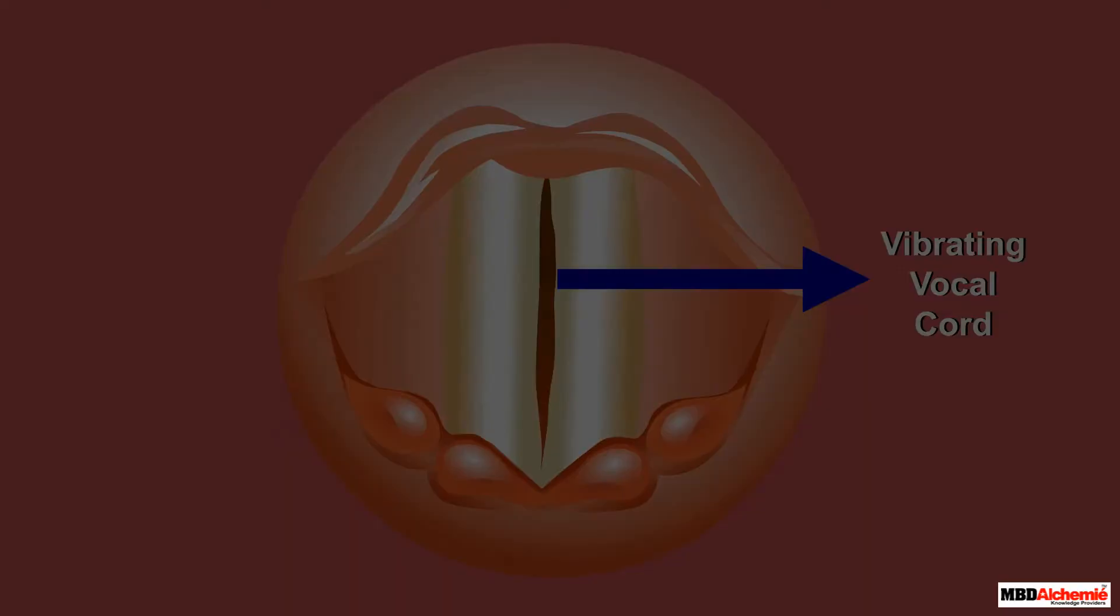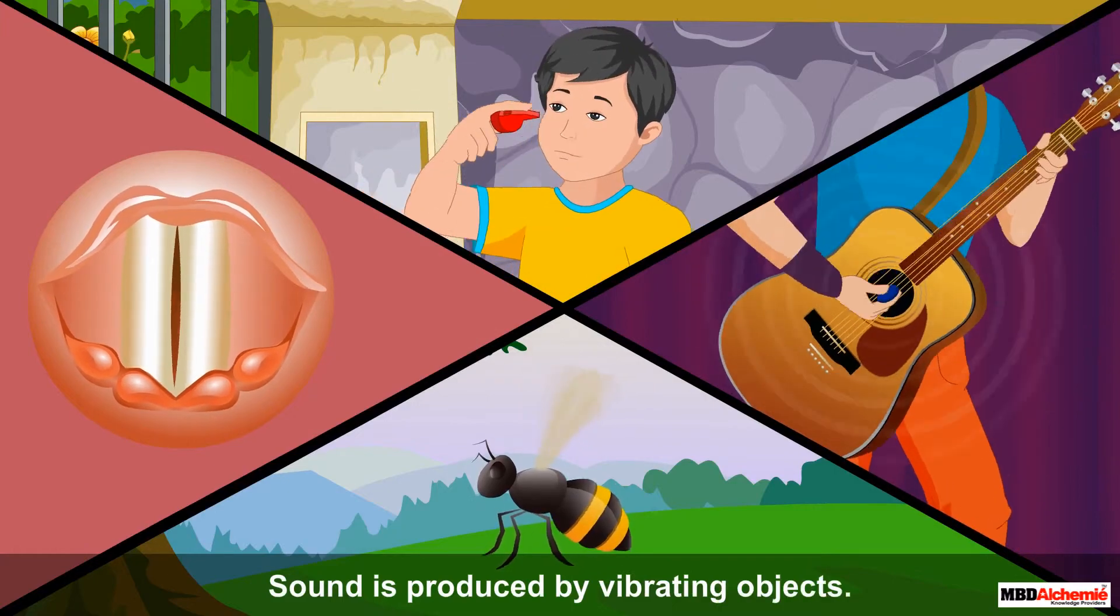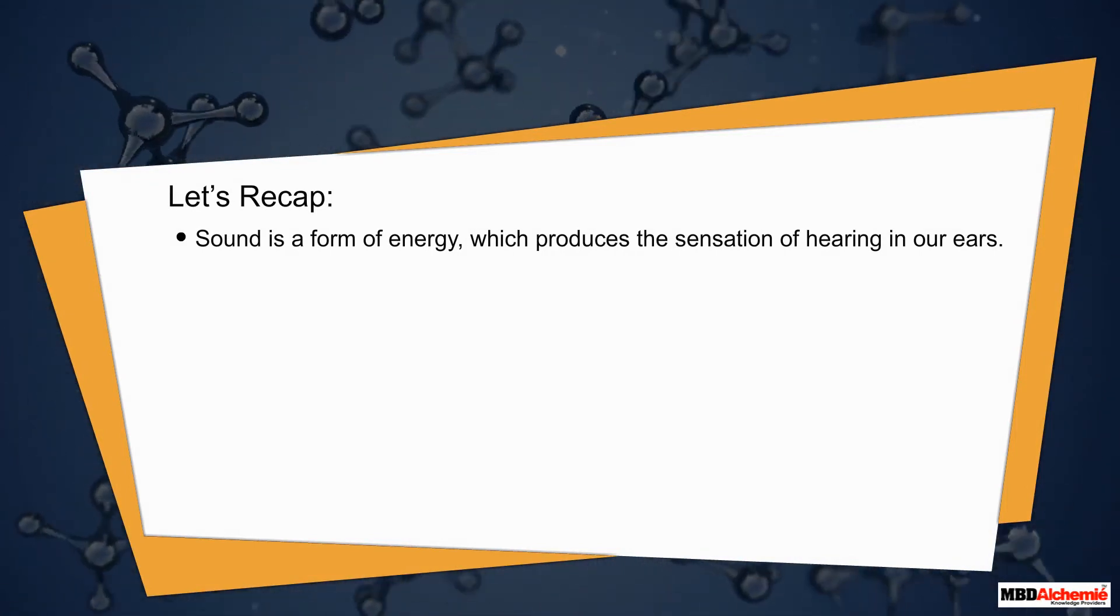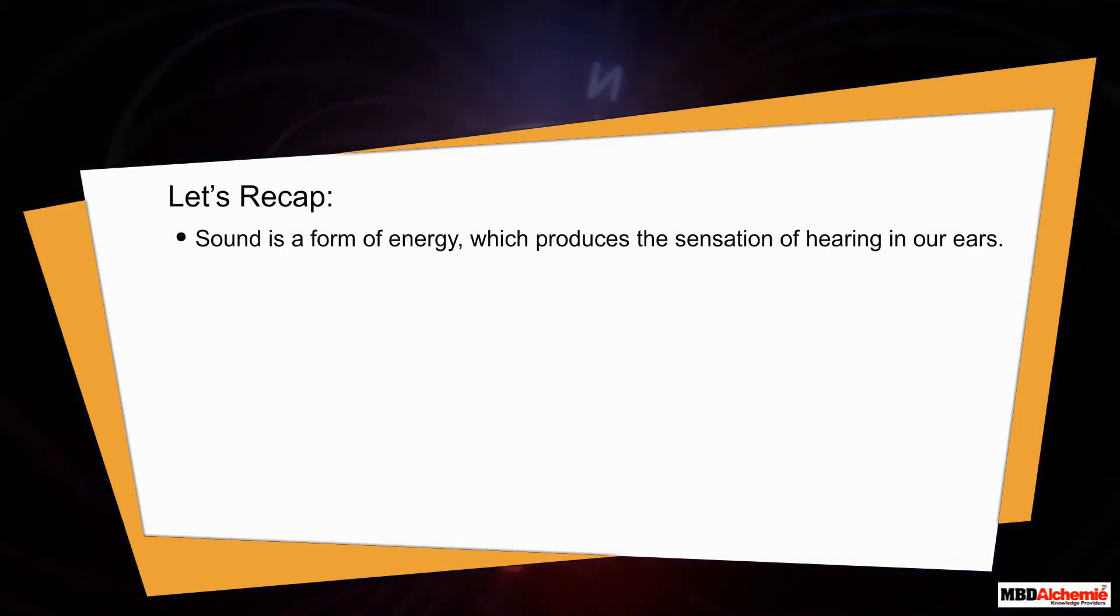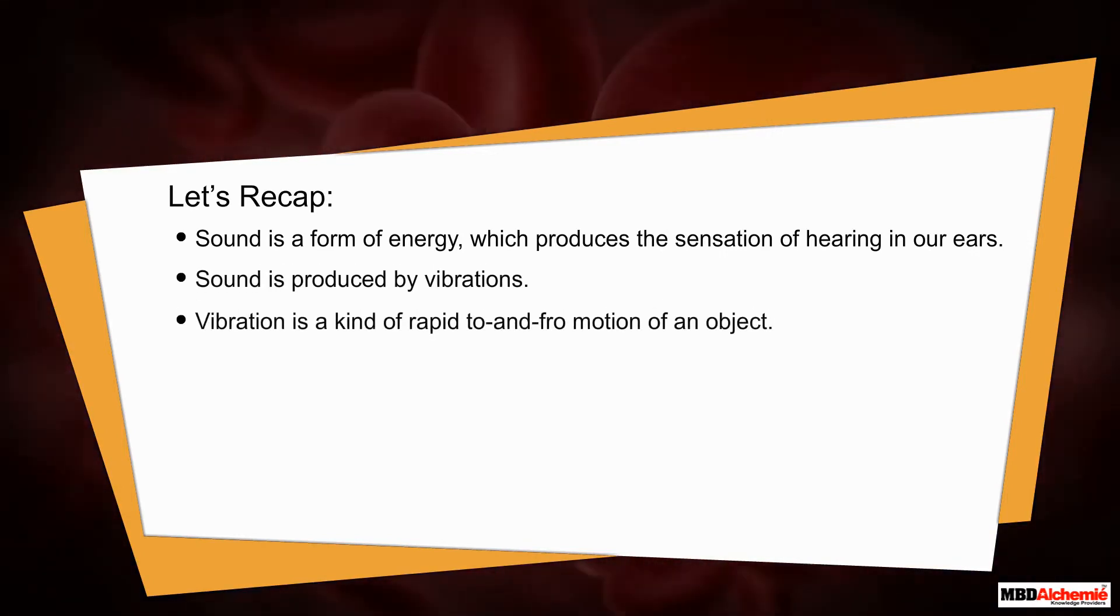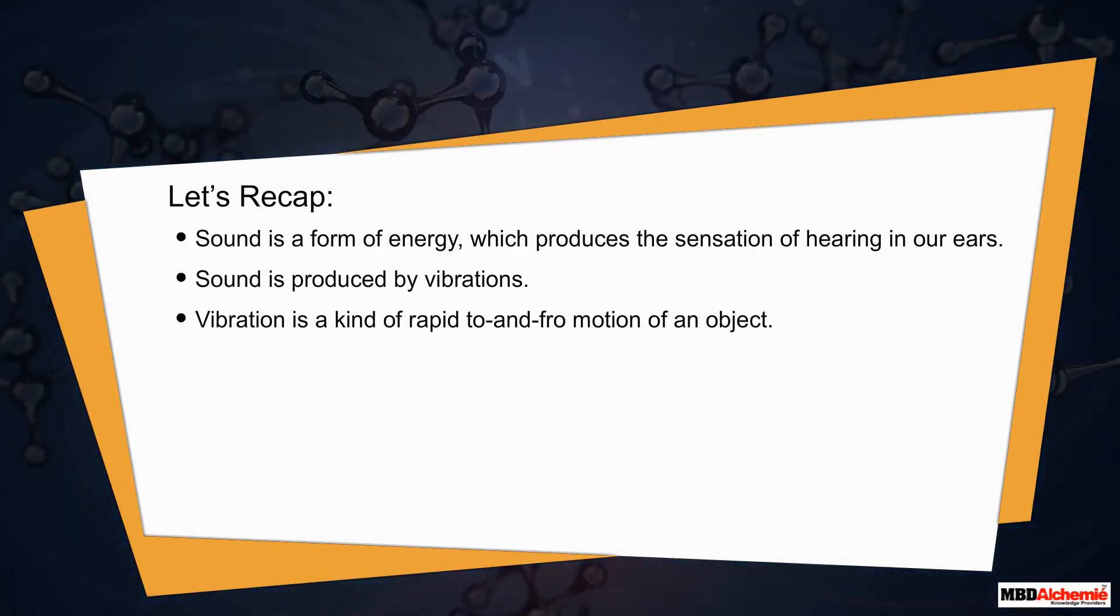Therefore, sound is produced by vibrating objects. Let's recap: Sound is a form of energy which produces the sensation of hearing in our ears. Sound is produced by vibrations. Vibration is a kind of rapid to-and-fro motion of an object.